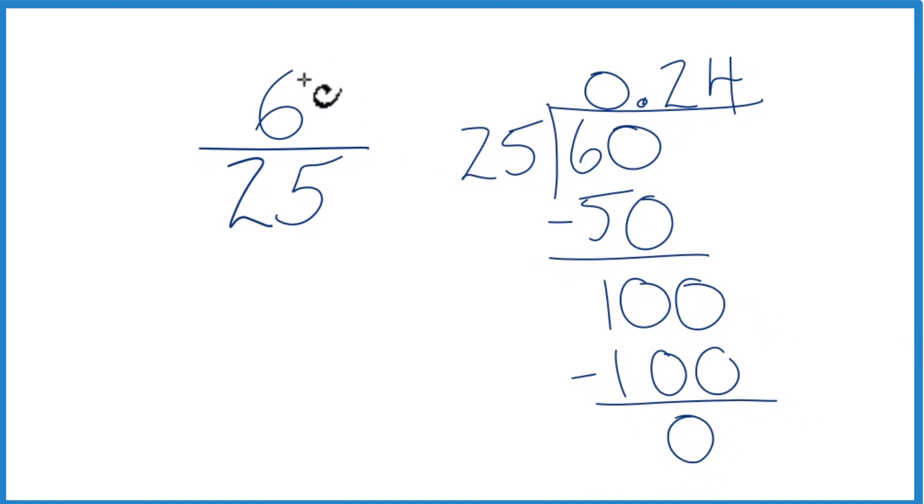So when we divide 6 by 25 and convert the fraction 6/25 to a decimal, we end up with 0.24. This is Dr. B, and thanks for watching.